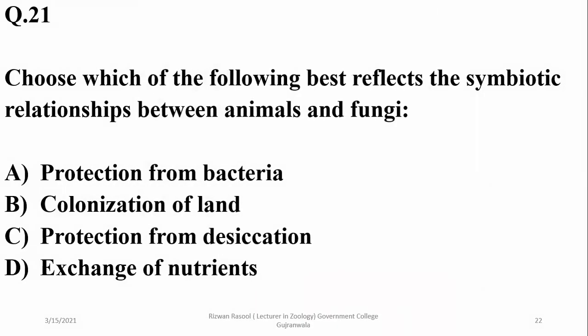Which of the following best reflects the symbiotic relationship between animals and fungi? Animals and fungi have exchange of nutrients in this way: certain dead bodies of animals are decomposed by fungi, and some fungi are used as food by the animals, so exchange of nutrients would be the right option. Protection from desiccation is found in lichen association, colonization of land in case of lichen association, and protection from bacteria is not a role of fungus for the animals, so the right option is D in this case.